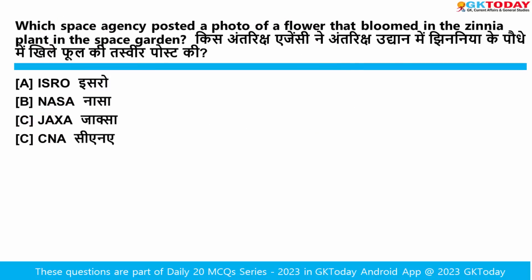Which space agency posted a photo of a flower that bloomed in the Zinnia plant in the space garden? NASA posted this photo of a flower which bloomed in the Zinnia plant grown on the International Space Station. From this experiment we learn that food can be grown in space. The first experiment started in 2015 by NASA astronaut Kjell Lindgren.